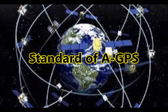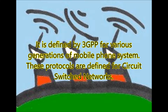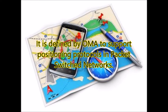Standard of AGPS — Control Plane Protocol: It is defined by 3GPP for various generations of mobile phone systems. These protocols are defined for circuit-switched networks. User Plane Protocol: It is defined by OMID to support positioning protocols in packet-switched networks.